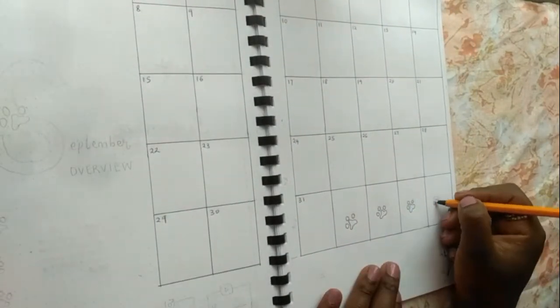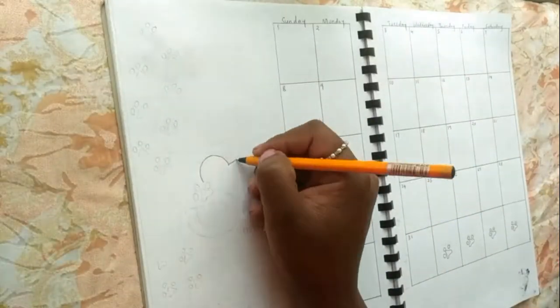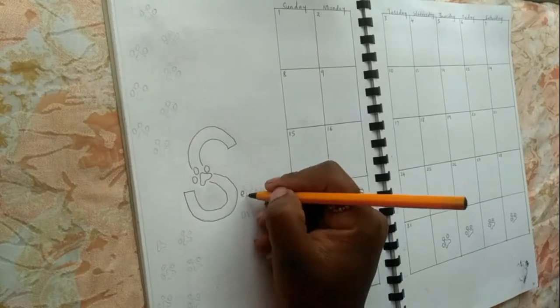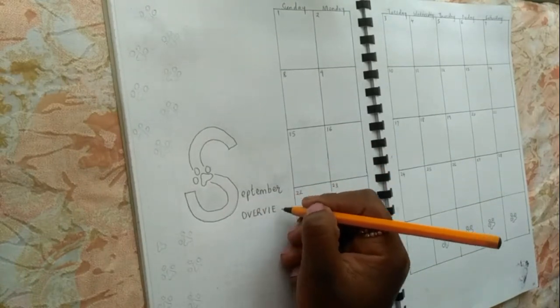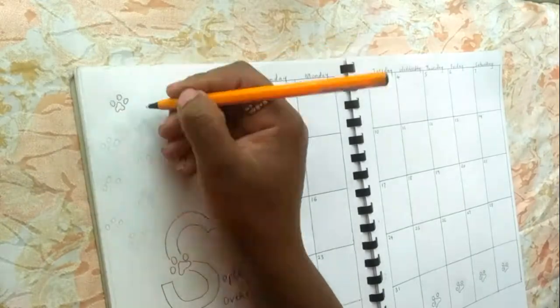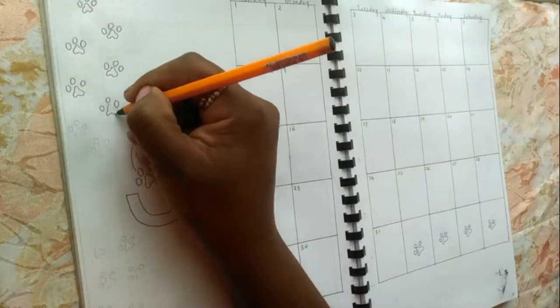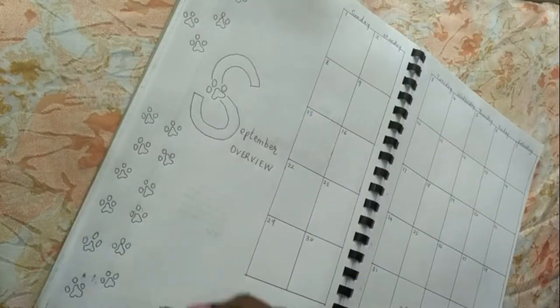I noticed I had 31 days instead of 30, so I corrected that error off-camera with some correction fluid and added a paw as well on that area. Finally, the title with tiny paw marks all over the place.